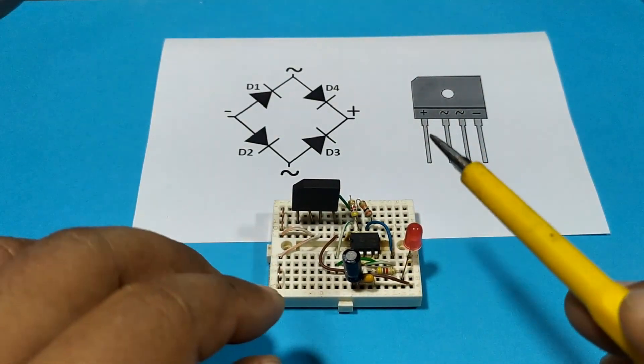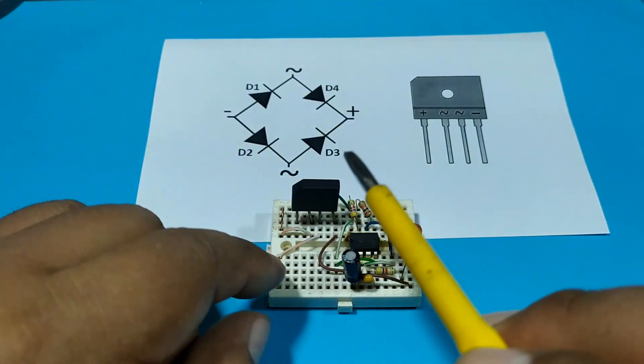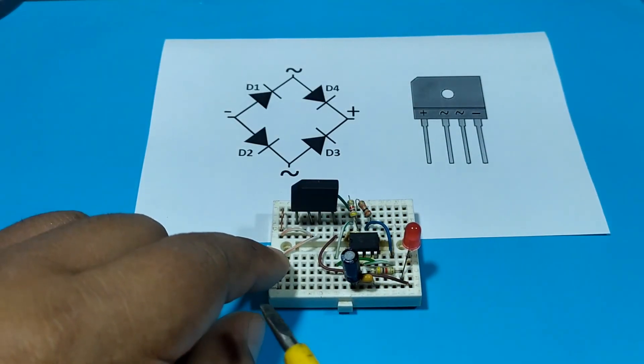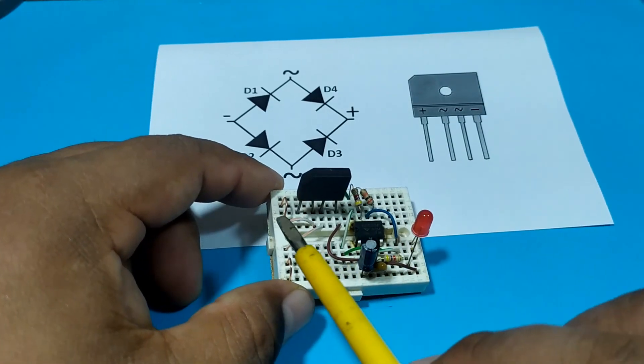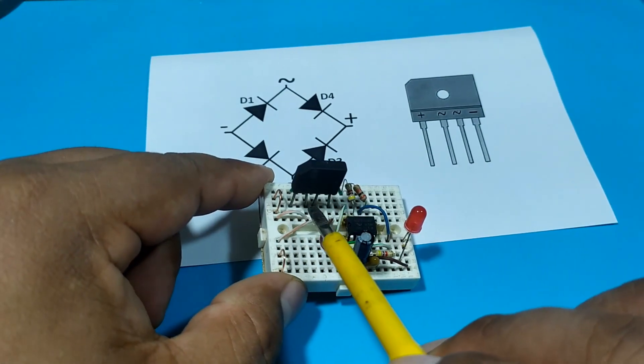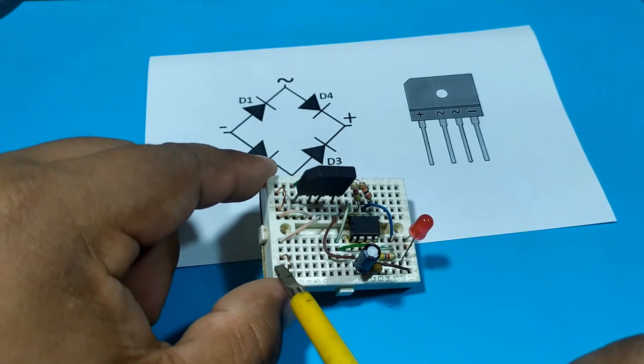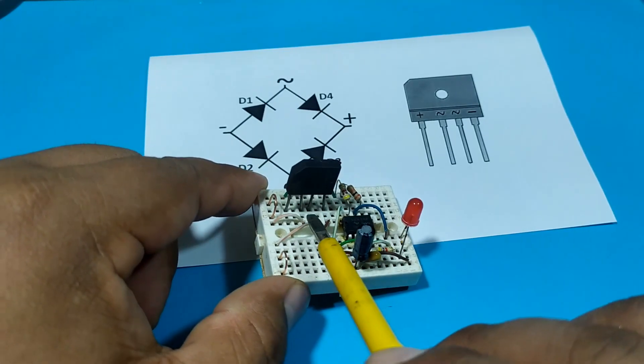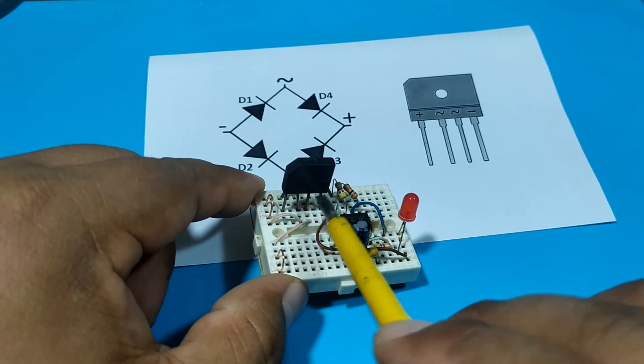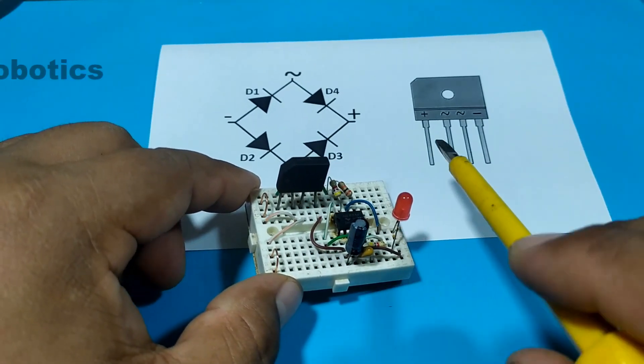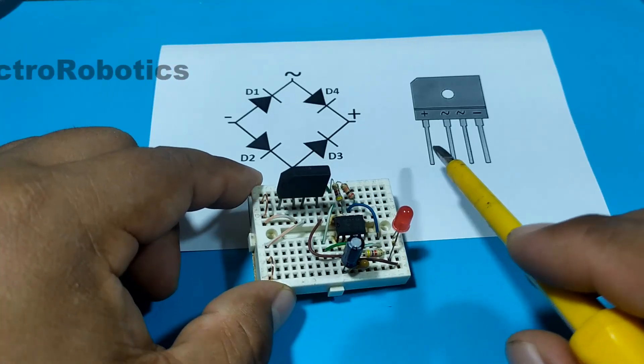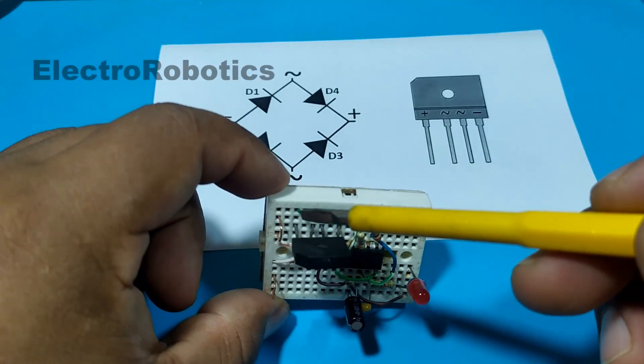Very well, we already have our diode bridge connected. The connections are the following. We have positive input to pin 2 or alternating input. Negative input to pin 3 or alternating input.